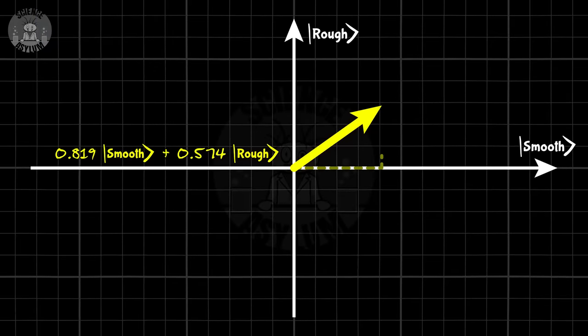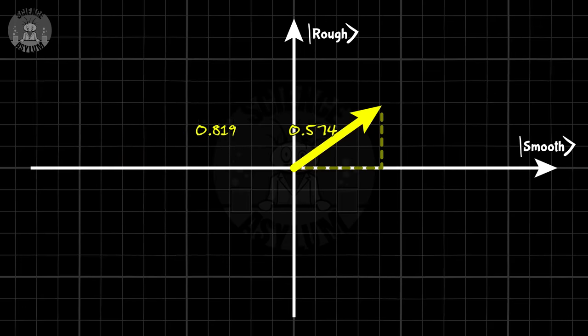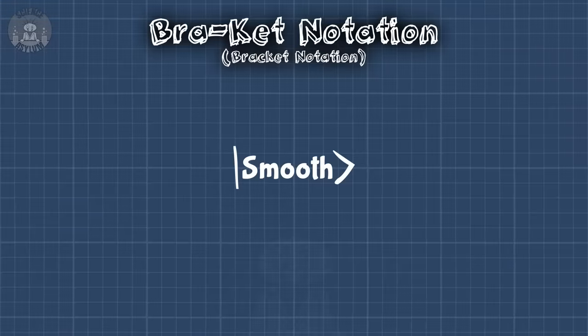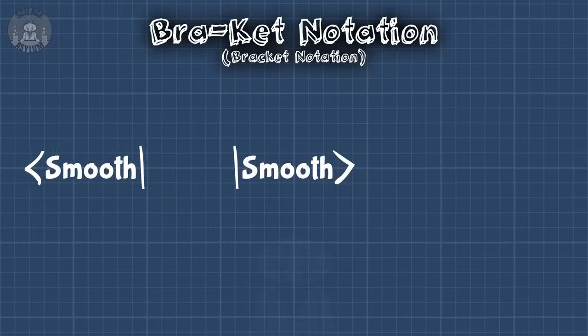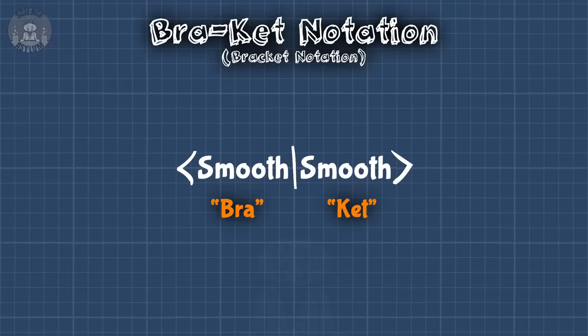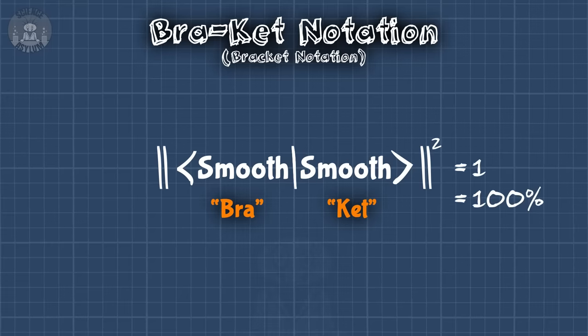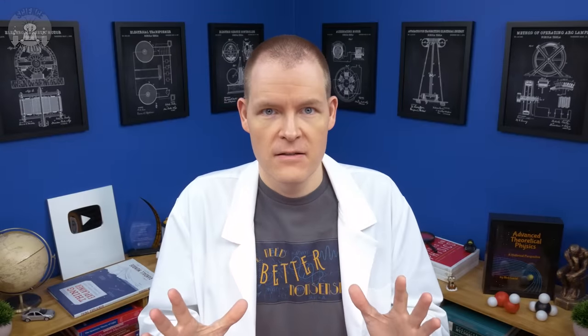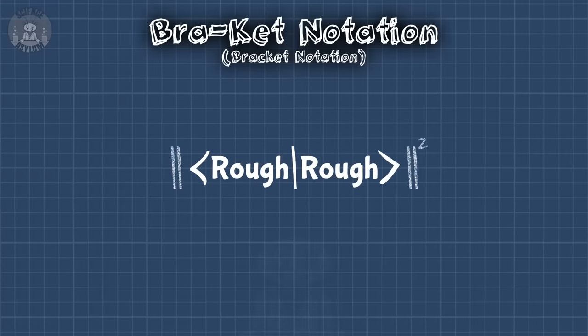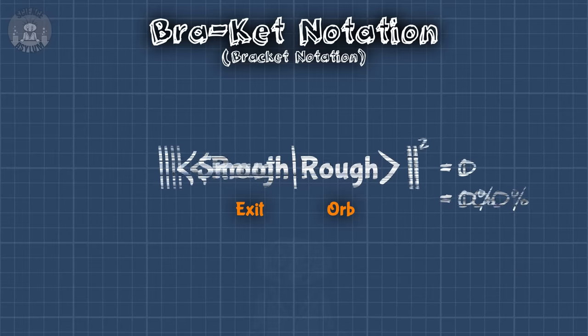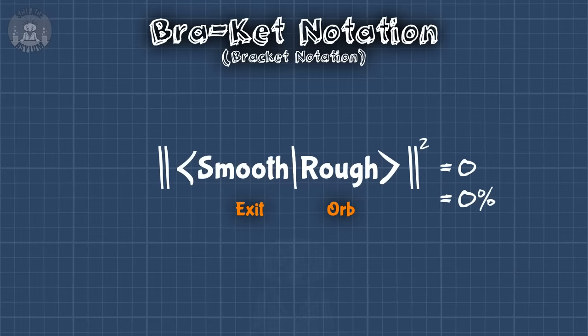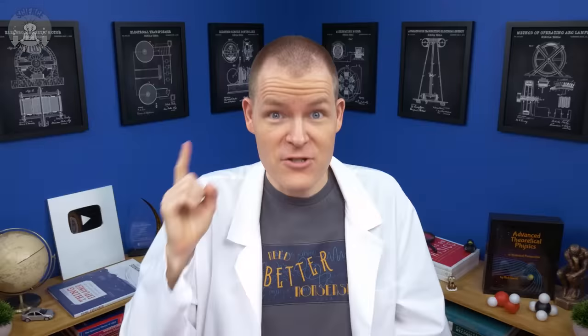The state vector actually tells us what those probabilities are and it does it with these numbers. This is where those BRA vectors come in. Say you've got an orb in this smooth state. The chances of it coming out the smooth exit should be 100%, right? Here's the smooth state written as a vector. Taking a measurement looks like this. A BRA vector next to a ket vector to make a full bracket. Squaring the answer gives us the probability, which is 1 or 100% in this case. We can do the same thing with the rough state. The chances of a rough orb coming out of the rough exit is 1 or 100%. The chances of a rough orb coming out of the smooth exit is 0%. The same goes for a smooth orb and the rough exit. As long as you can remember those four options, we can do this with superpositions too.